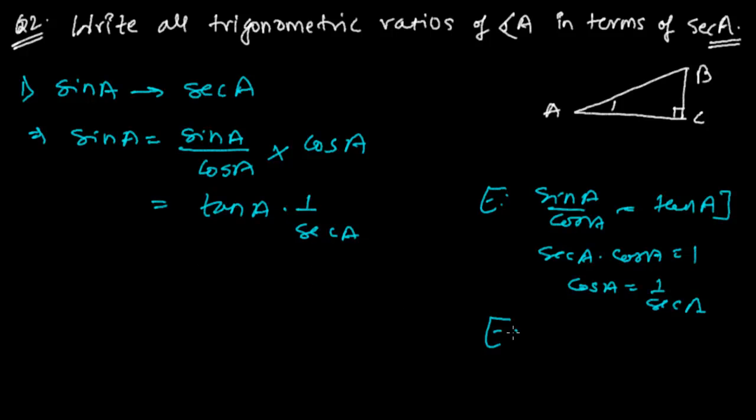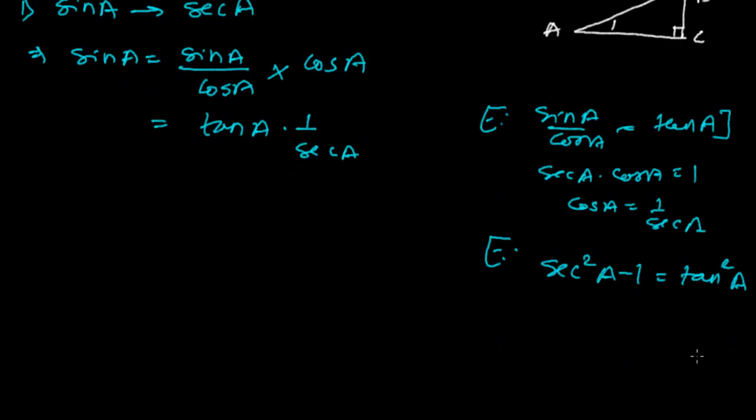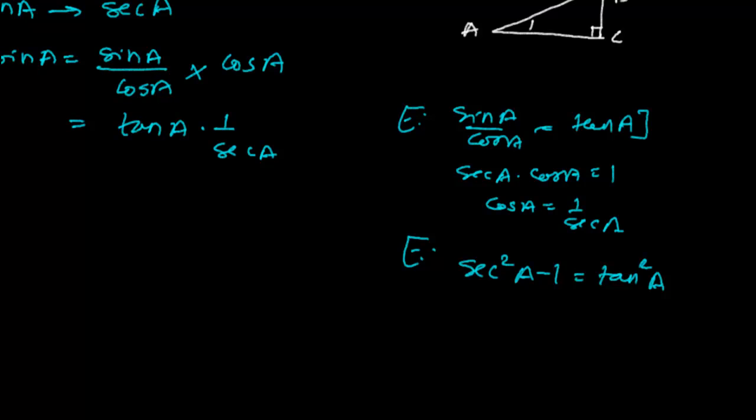So now again we know another identity. So let's see. Originally we have proved that sec square A minus 1 is tan square A. So from this expression, what we can, this relationship, what I can do this,